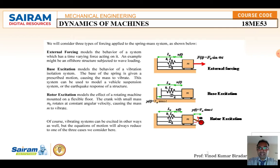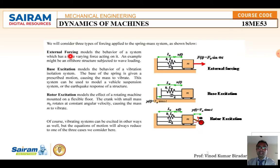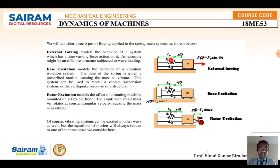Consider the three different types of force: external forcing, base excitation, and rotor excitation, as shown in the diagram. For external force, it is a model of the behavior of a system with a time-varying force acting on it — for example, an offshore structure subject to wave loading. The red color in the diagram shows the external force pulling the mass to the right-hand side. That force is F = F₀ sin(ωt), applied to a spring-mass-damper system where one end is fixed, the other is free, and the displacement is x(t).